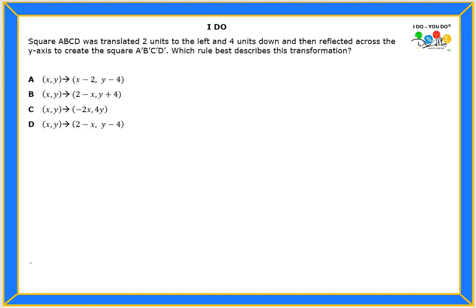Hello students, let's read the problem. It says square ABCD was translated two units to the left and four units down and then reflected across the y-axis to create the square A prime B prime C prime D prime, which rule best describes this transformation?